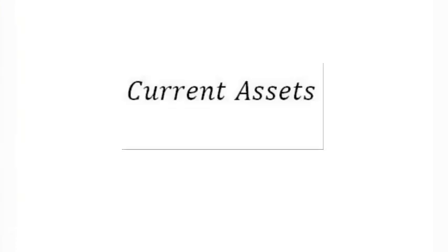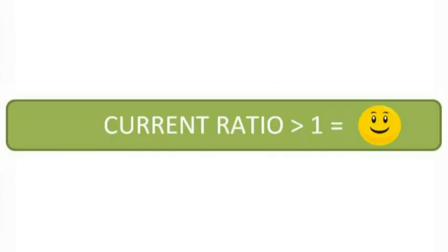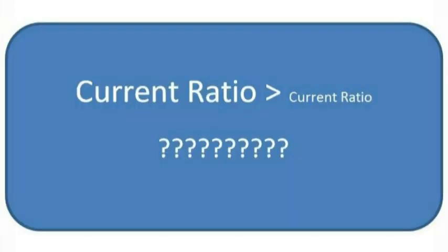The current ratio can be defined as all current assets divided by all current liabilities. A current ratio above 1 is usually considered good, and anything below 1 is a signal that there may be financial problems on the horizon. Generally, the higher the ratio the better.